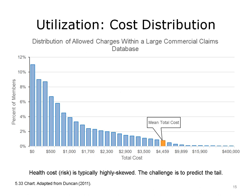This bar chart shows the distribution of cost across the entire population of a large commercial claims database. As shown on the left side of the chart, a large majority of the population incurs less than the mean total cost, which is set at $4,459 for this particular health plan. However, a long tail of high utilizers exists on the right side of the chart. The main challenge in population health analytics is to predict this highly skewed long tail of utilizers.